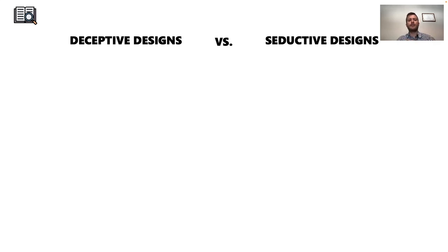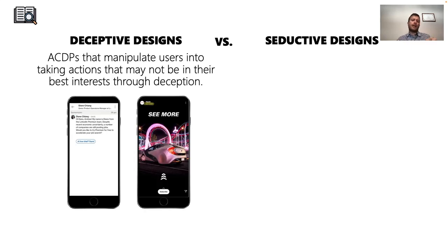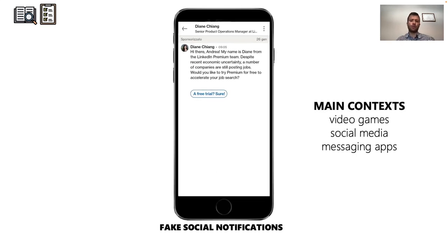We split these patterns into two main categories. The first is deceptive designs, which introduce some form of deception in the user interface, deceiving users into performing certain actions rather than others. A first example is a pattern we call fake social notifications, common across video games, social media, and messaging applications. In its basic form, a digital platform sends messages pretending to be a real user. Here you can see an example from LinkedIn, which sends a message asking the user to try a premium plan — violating the expectation that chat messages should come from a real person.